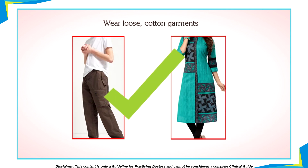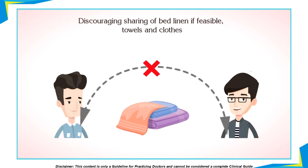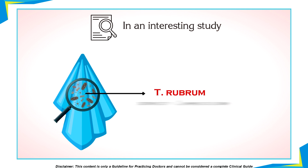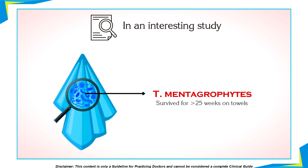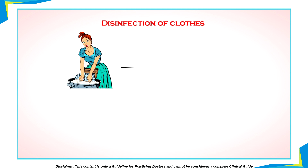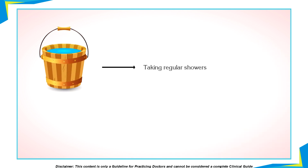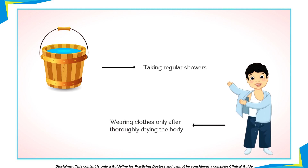We also need to advise teenagers against wearing tight garments, jeans, leggings, and jeggings. Make sure they wear loose-fitting, cotton, light-weighted garments, especially during summer. Discourage sharing of bed linen, towels, and personal clothing. Regular washing of towels and bed linens is very important and part of the therapy. In an interesting study, T. rubrum survived for more than 12 weeks on a towel, whereas T. mentagrophytes survived for almost more than 25 weeks on towels. This highlights the importance of disinfection of clothes, best done by washing in hot water at around 60 degrees and drying them well in sunlight. Sunlight is considered to be the most effective disinfectant for dermatophytes.